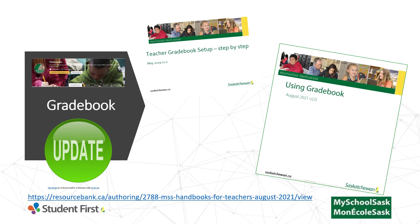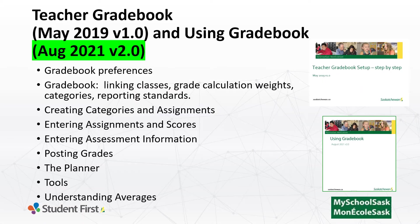We want everybody to know that the Using Gradebook document — the Aspen generic one — has been updated and now contains a number of Saskatchewan-specific information, which is wonderful. We still have unique customizations as a division to consider in relation to how we report for grades 1 to 9 using outcome-based reporting, and a bit more traditionally for grades 10 to 12. If you have older versions of these handbooks in your binders or OneDrive folders, please note that the Using Gradebook has been updated.